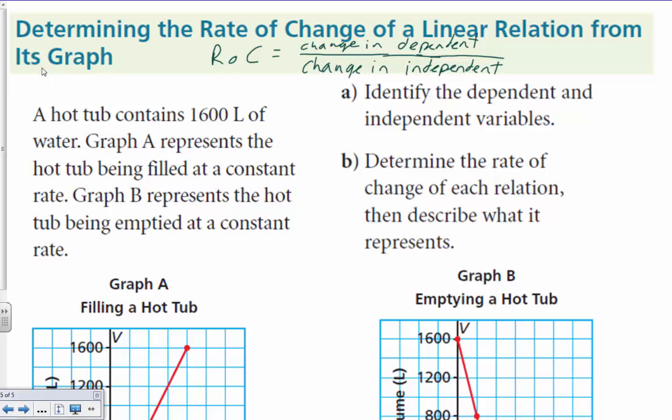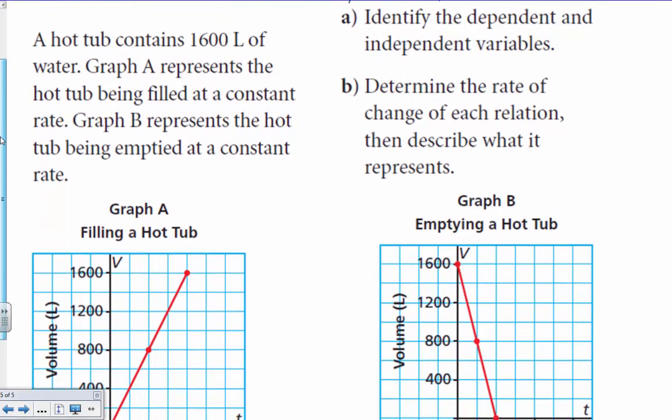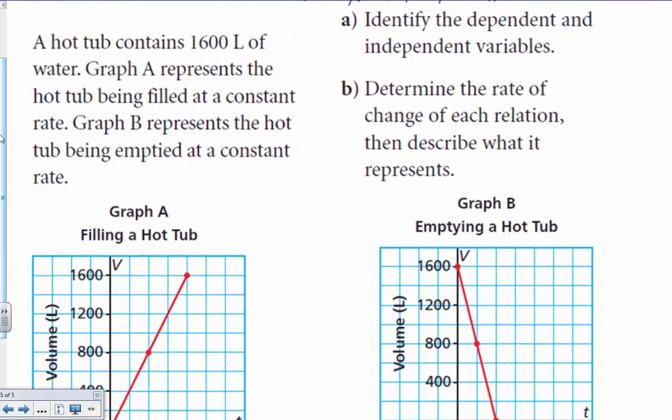Okay, so our hot tub contains 1,600 liters of water. Graph A represents the hot tub being filled at a constant rate. Graph B represents the hot tub being emptied at a constant rate.